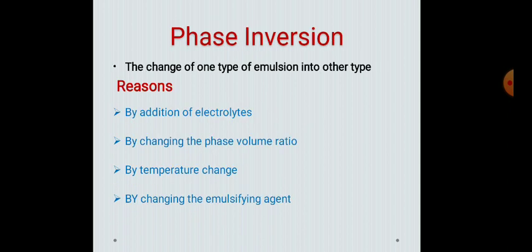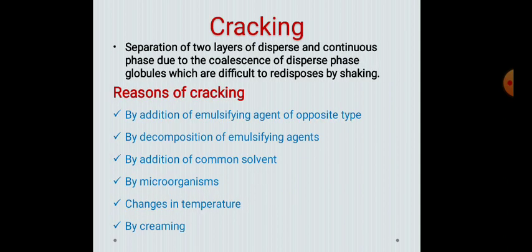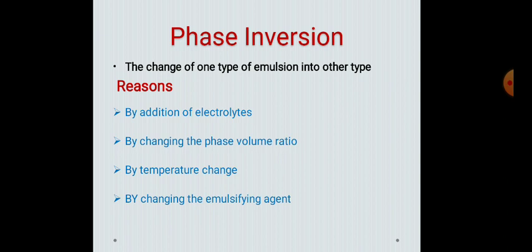The third stability parameter is phase inversion. Phase inversion means the change of one type of emulsion into the other — that is, oil-in-water emulsion changes into water-in-oil emulsion and vice versa. It may occur due to the following reasons: by addition of electrolyte, by changing the phase volume ratio, by temperature change, or by changing the emulsifying agent. These are the three different stability parameters: cracking, creaming, and phase inversion.